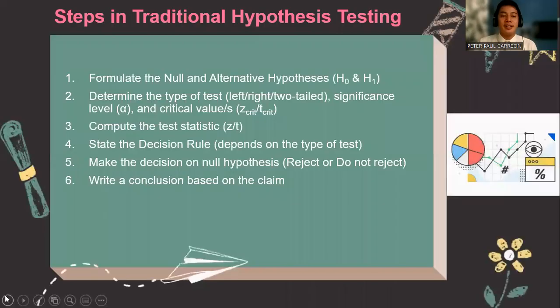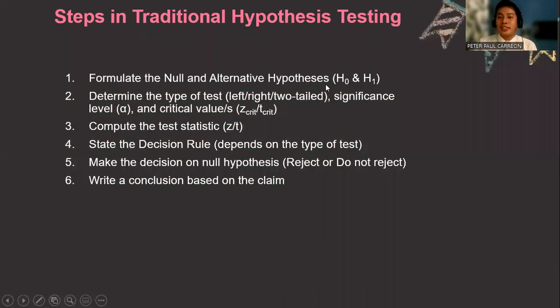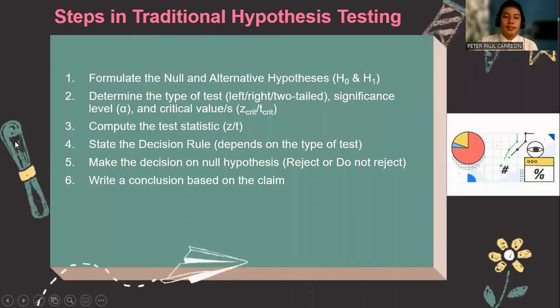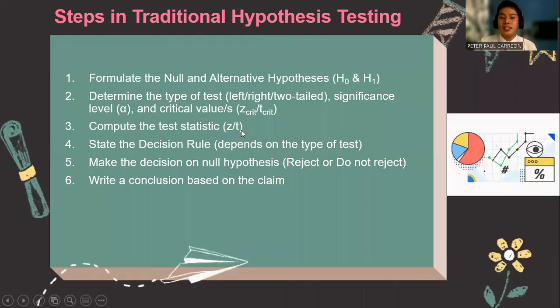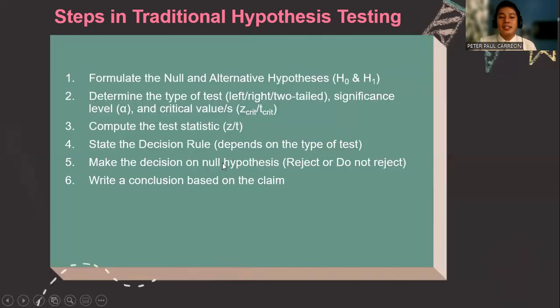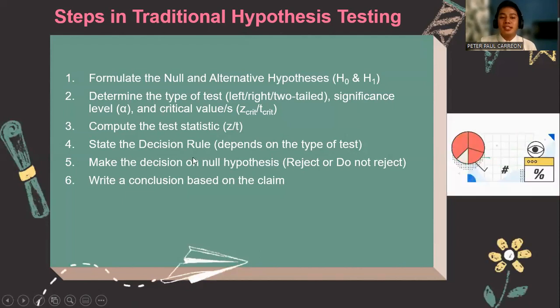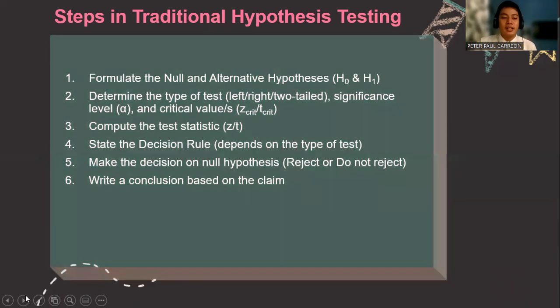Here are the steps in solving. Number one, we have to formulate the null and alternative hypothesis. Number two, we need to determine the type of test, whether it's left-tailed, right-tailed, or two-tailed, the significance level, and the critical values. Number three, we have to compute for the test statistics, whether it's z or t. But in this example, we will use the t-test. State the decision rule, make the decision on the null hypothesis, and lastly, we write the conclusion based on the claim.